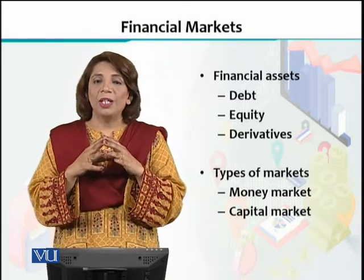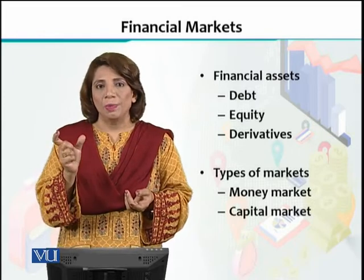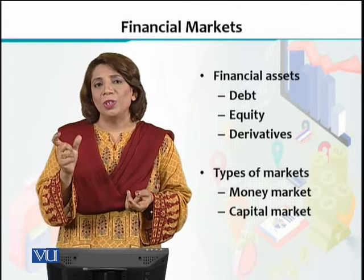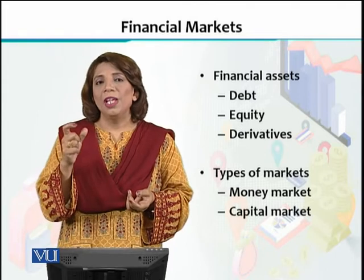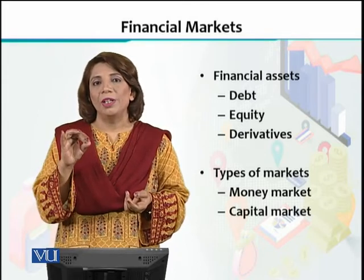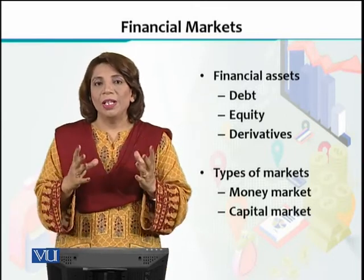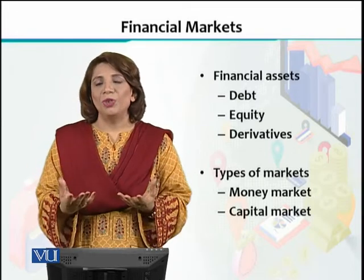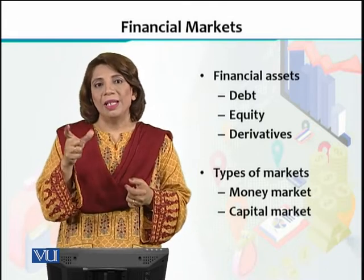Financial market do tarah ki ho sakti hai, aur is classification ko hum waqt ke oopar base karte hain. Waqt ka matlab hai ke aapne jo bhi financial instruments ko buy sell kiya hai, uska time period kitna hai. Financial markets can be segregated or divided as the money market and the capital market. Money market kya hoti hai? Money market comprises of all those financial instruments jin ki maturity ek saal se kam period ki ho.